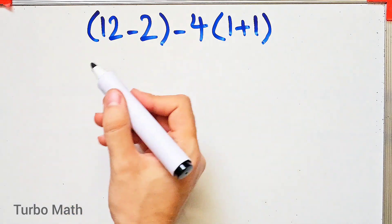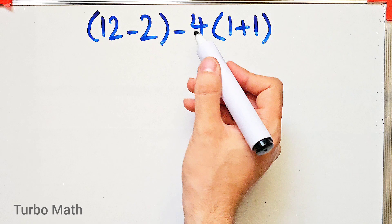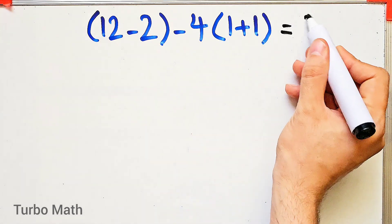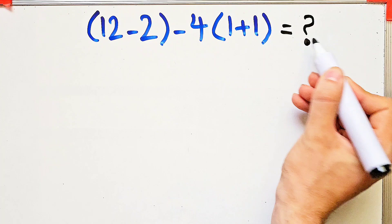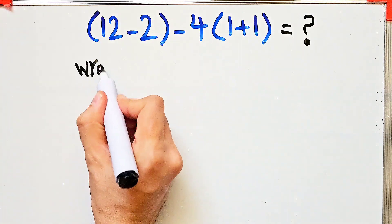Hi friends, welcome to Turbo Math channel. 12 minus 2, then minus 4 times open parenthesis 1 plus 1 close parenthesis. What is the answer to this question? In the wrong way of solving this question, some people solve this question like this: